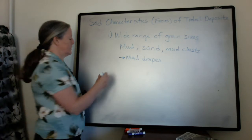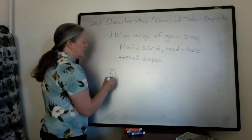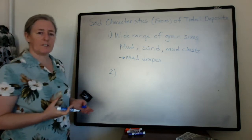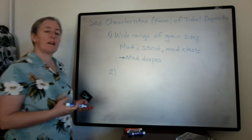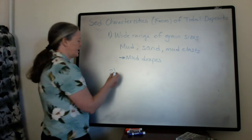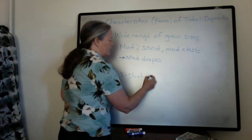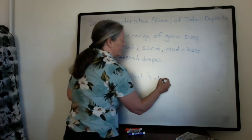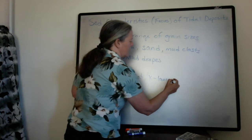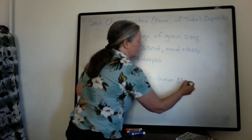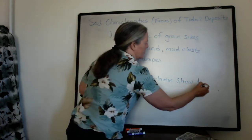So the second characteristic of tides is that the cross lamination, cross stratification shows evidence of transport in multiple directions. So you can say the cross strat and or the cross lamination show transport in multiple directions.